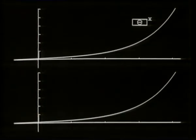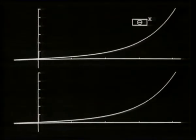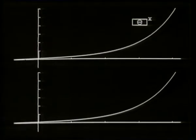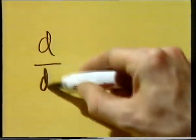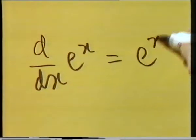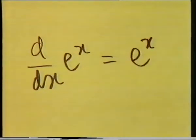The derived function of e to the x is just e to the x. That's the important thing about the number e. The derivative of e to the x — in Leibniz notation, d by dx of e to the x — is exactly the same, e to the x. This special function, e to the x, is often called the exponential function, which can be shortened to exp.